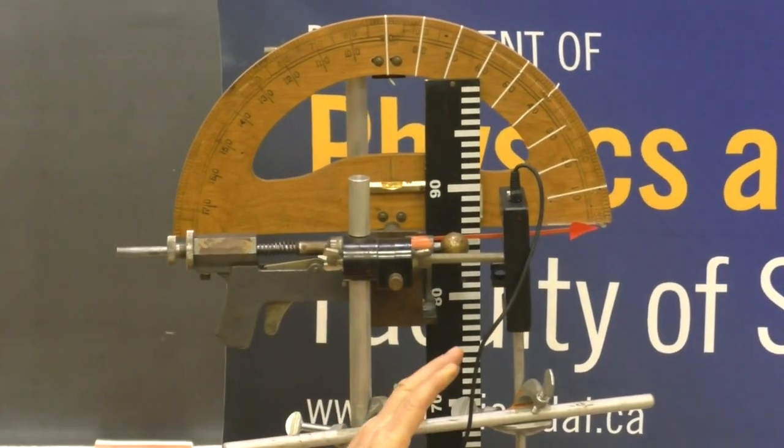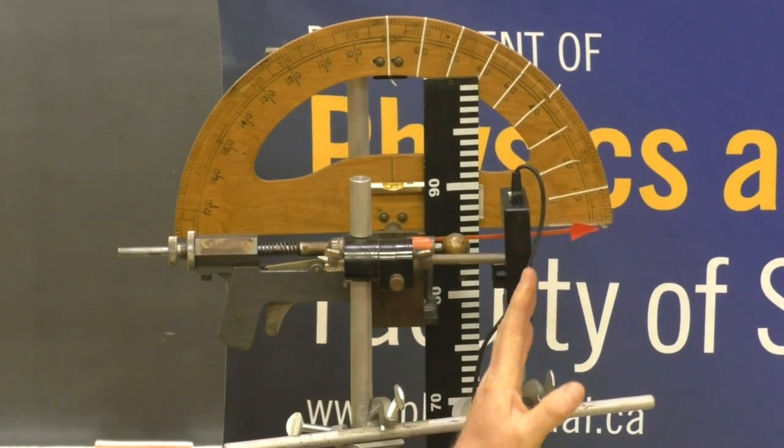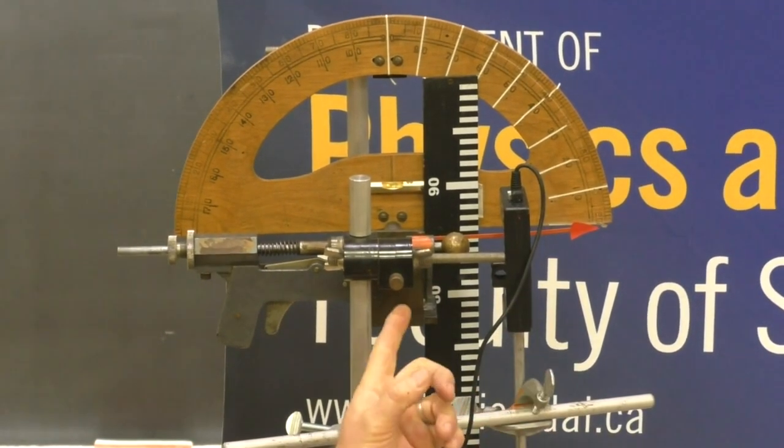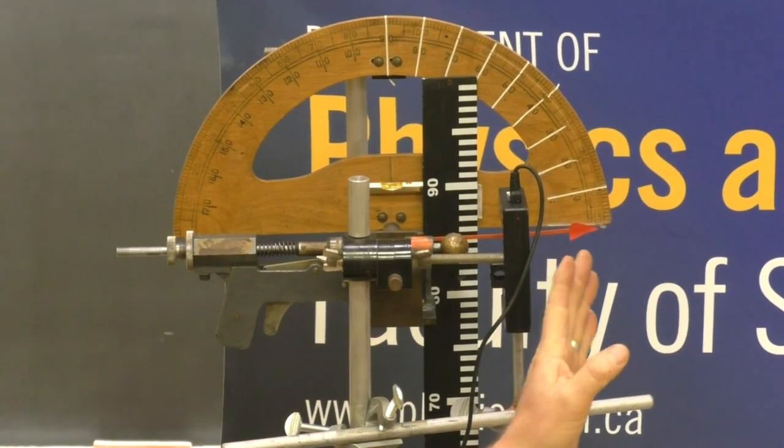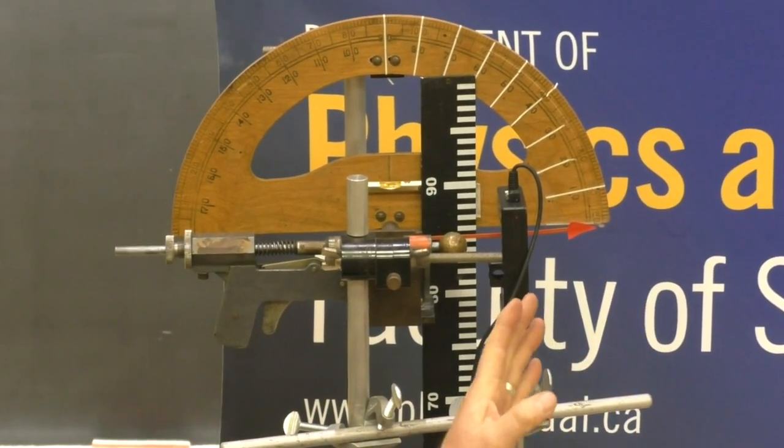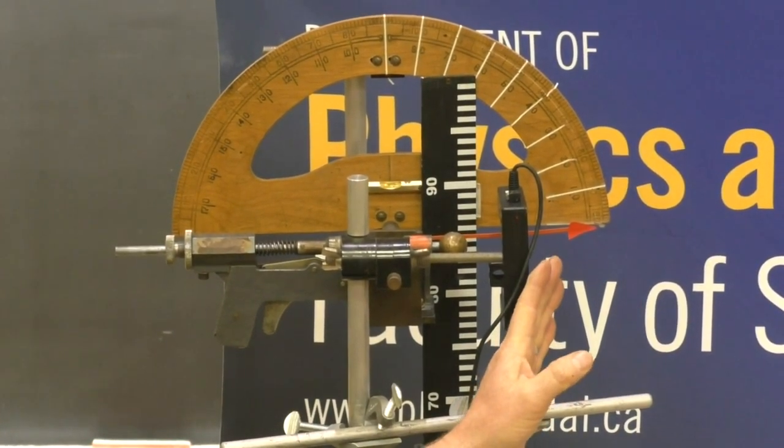And then this black device that you see is a speed sensor. As the bullet goes past the speed sensor, we can tell what its speed is. We'll fire the bullet to measure its speed in a minute.